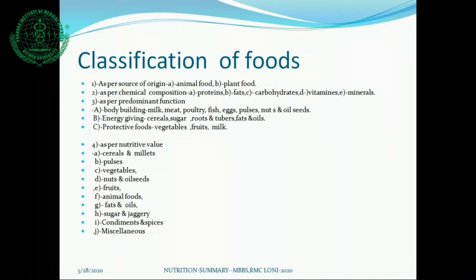A third classification is according to predominant function: Number 1 is body-building foods like milk, meat, poultry, fish, eggs, pulses, nuts, and oil seeds. Number 2 is energy-giving foods including cereals, sugar, roots and tubers, fats, and oils. Number 3 is protective foods including vegetables, oils, and milk. A fourth classification is by nutritive value: cereals and millets, pulses, vegetables, nuts and oil seeds, and fruits.